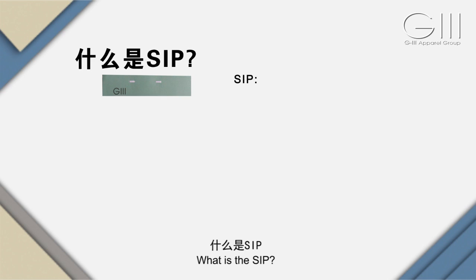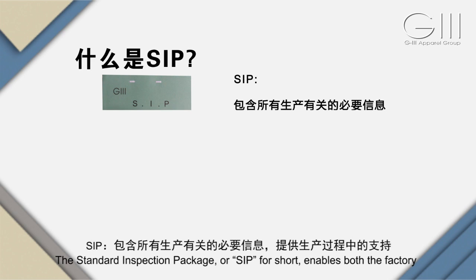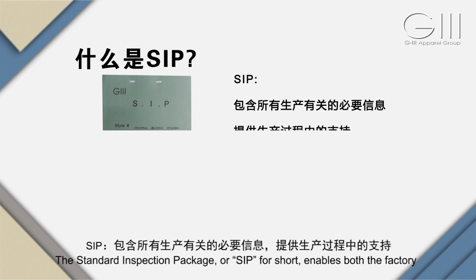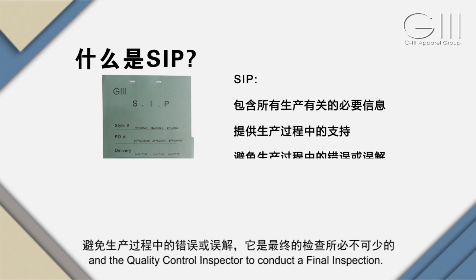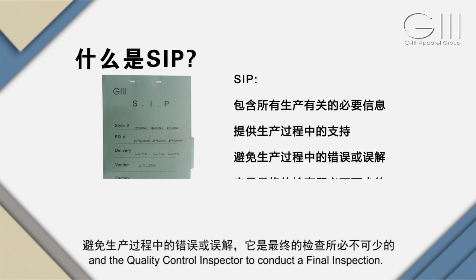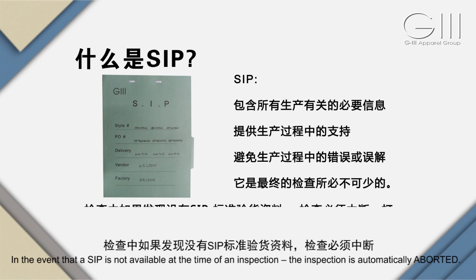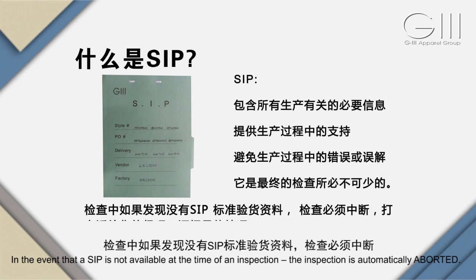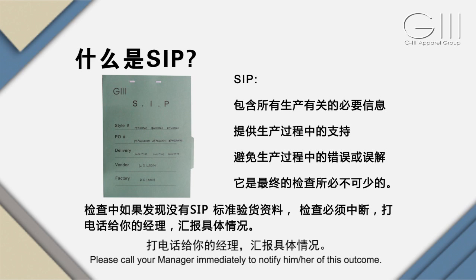什么是SIP？SIP包含所有生产有关的必要信息，提供生产过程中的支持，避免生产过程中的错误或误解，它是最终检查所必不可少的。检查中，如果发现没有SIP标准验货资料，检查必须中断，打电话给你的经理汇报具体情况。